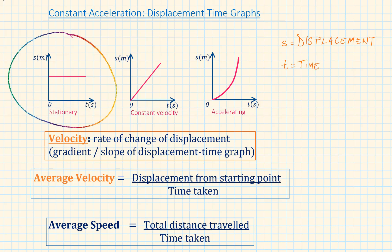In the first scenario, there is no change in the displacement. Our object is stationary. In our second scenario, the straight line represents constant velocity. The displacement increases at a constant rate over time.